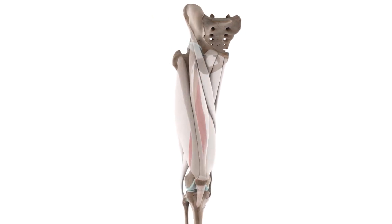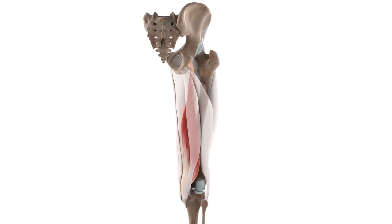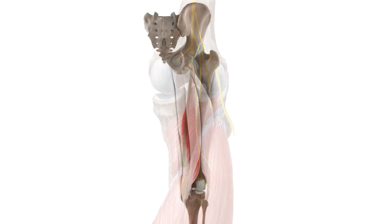The semimembranosus is one of the three muscles found in the posterior compartment of the thigh, known as the hamstrings. One of the key aspects to the proper functioning of a muscle is innervation. The semimembranosus is innervated by the tibial nerve, which is the tibial branch of the sciatic nerve.